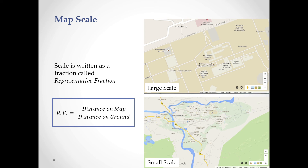Map scale is written as a fraction called the representative fraction — that is, distance on the map divided by the distance on the ground. For example, if you are mapping a football ground with a length of 100 meters, and you represent it as 10 centimeters on the map, then the scale is 10 divided by 100, giving you the representative fraction.